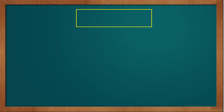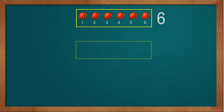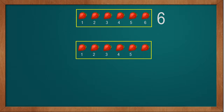Now we will see another example. We will take 6 strawberries: 1, 2, 3, 4, 5, 6. We have a total of 6 strawberries. Now we will take 6 more strawberries: 1, 2, 3, 4, 5, 6. We have 6 more strawberries.